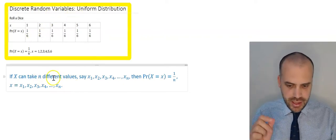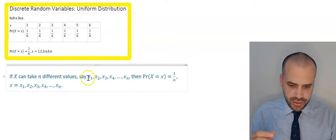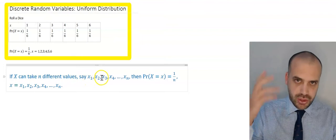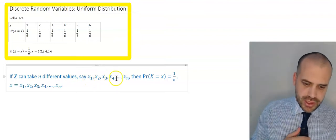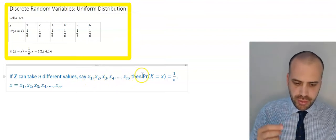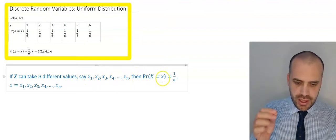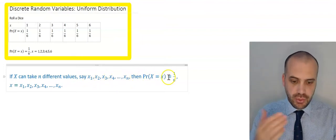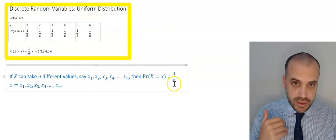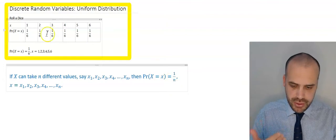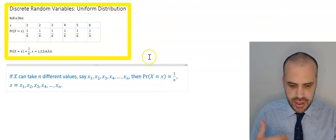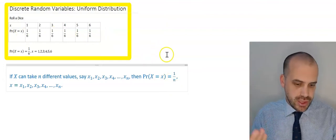More generally, if x can take n different values — x1, x2, x3, x4, etc. — then the probability that x equals x is equal to 1 on n, the number of values. We have 6 values here, so 1 on 6.